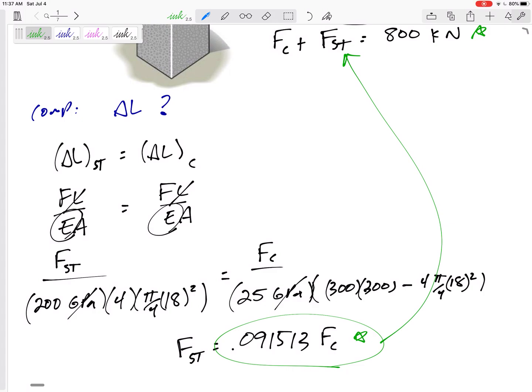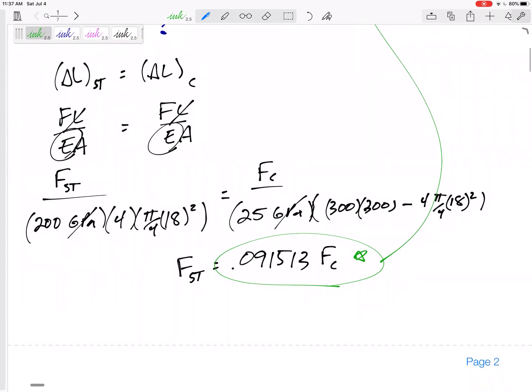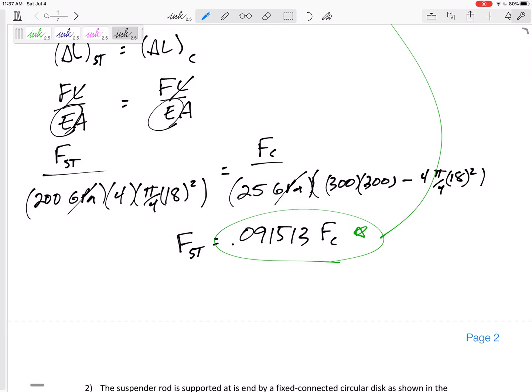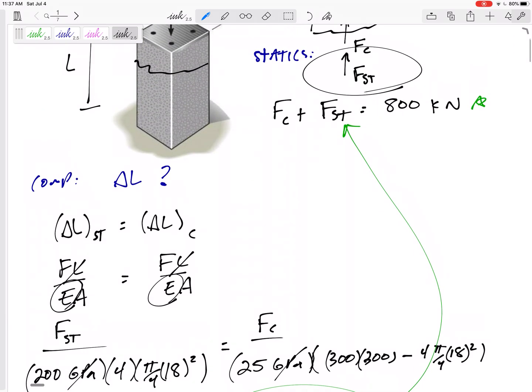So I've got 1.0915 Fc equals the force in the concrete. So I would get that the force in the concrete is 732.9 kilonewtons. The force in the steel is 67.07 kilonewtons.